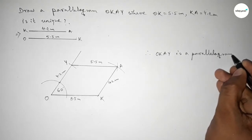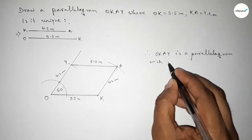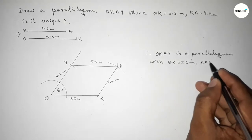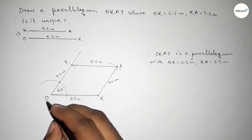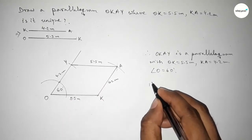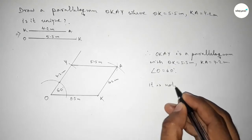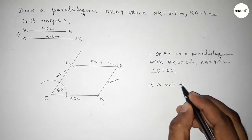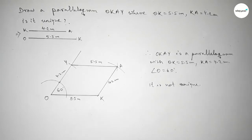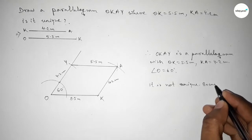With given side OK equal to 5.5 centimeters and KA equal to 4.2 centimeters, and angle O equal to 60 degrees. But it is not unique because for different angles, if we take 30 degrees, we can draw another parallelogram.